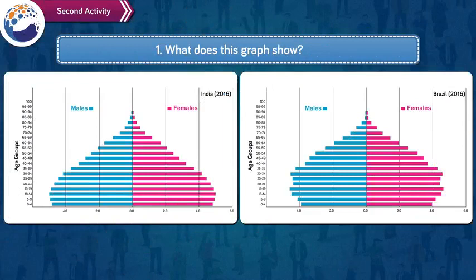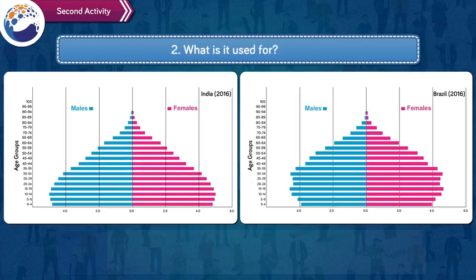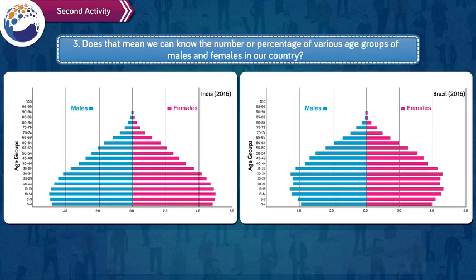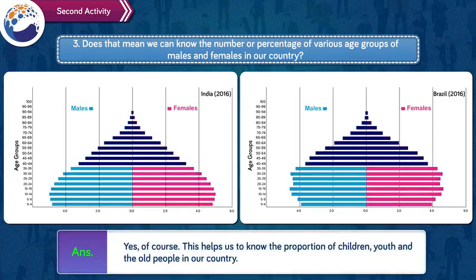5. What does this graph show? Answer: This graph shows the age and sex of population. It is also known as a population pyramid. 6. What is it used for? Answer: It is used to study the age and sex related aspects of a region's population. Does that mean we can know the percentage of various age groups of males and females in our country? Answer: Yes, of course. This helps us to know the proportion of children, youth and old people in our country.